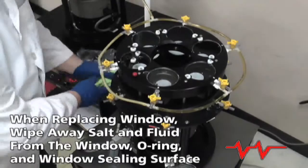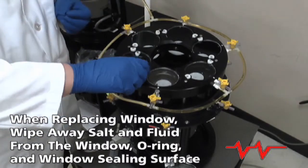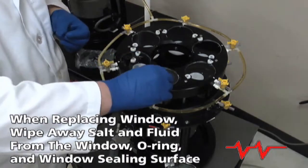When you are putting a window back on, wipe any salt and fluid from the edges of the window and O-ring, as well as the window sealing surface.